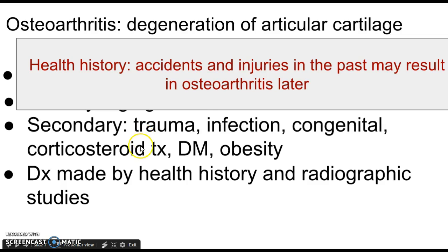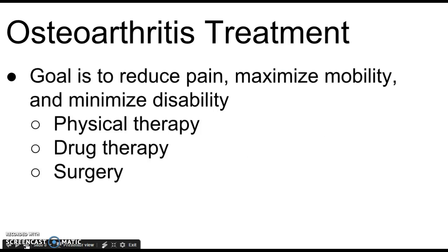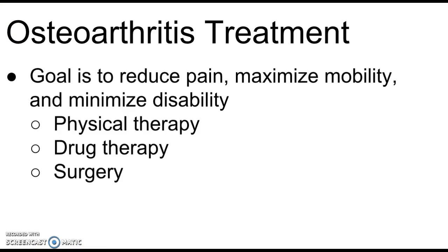In the health history for osteoarthritis, we'll usually find some past accident or injury — playing tennis, jogging, or a bad car accident — that may have contributed to development of the condition. We'll pause here and get to treatment in the next video.